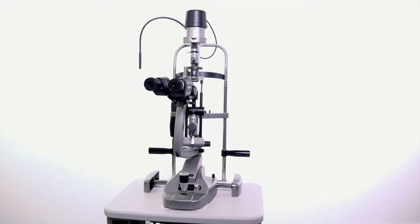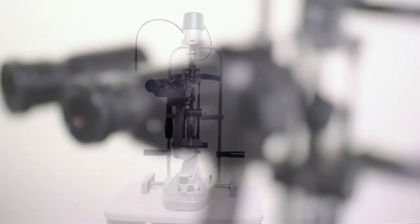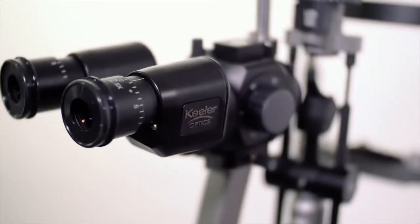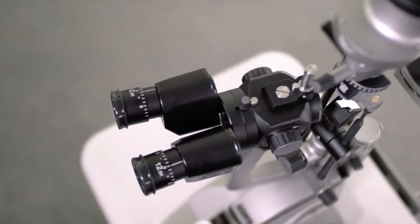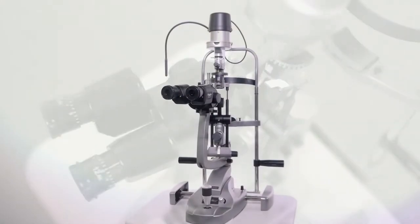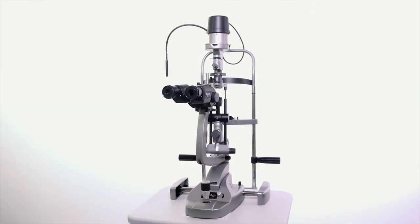The K-Series slit lamps are our upper illumination systems that are used for examination of the anterior segment and posterior segment of the eye. This video will provide an overview of the features of the K-Series and instructions on how to use it.